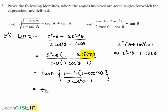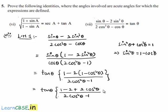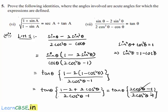This will be equal to tan theta times 1. By rearranging the terms, we get 2 cos squared theta minus 1 in the numerator. Since 2 cos squared theta minus 1 is common in both numerator and denominator, it will be cancelled, and finally we are left with tan theta.